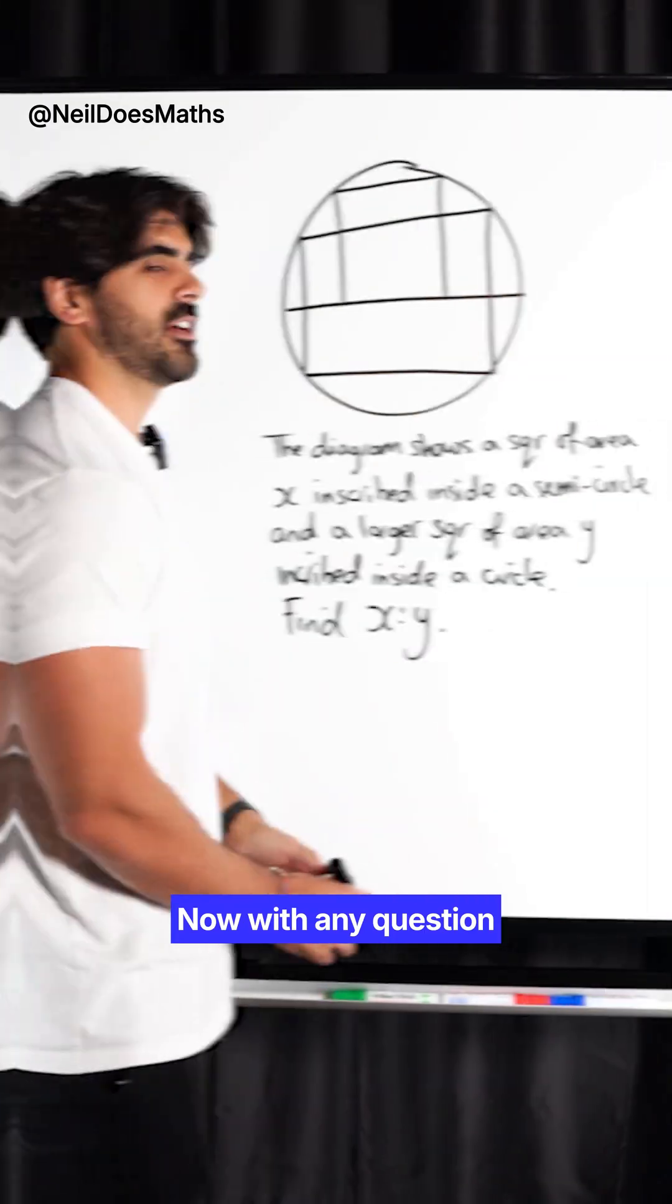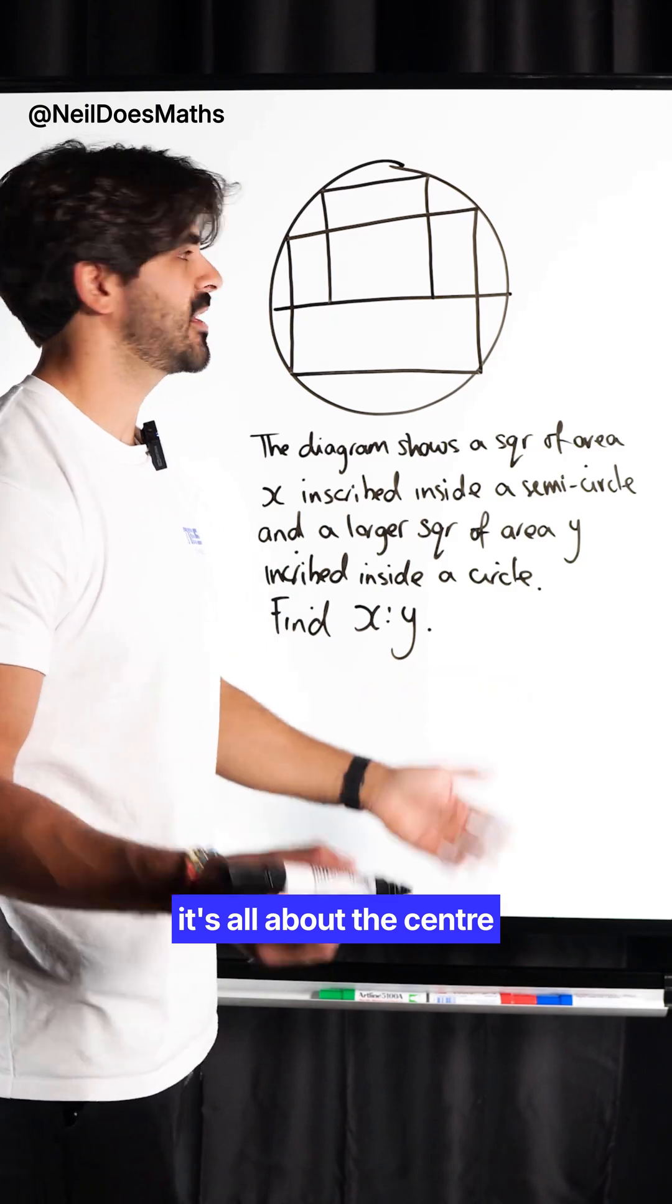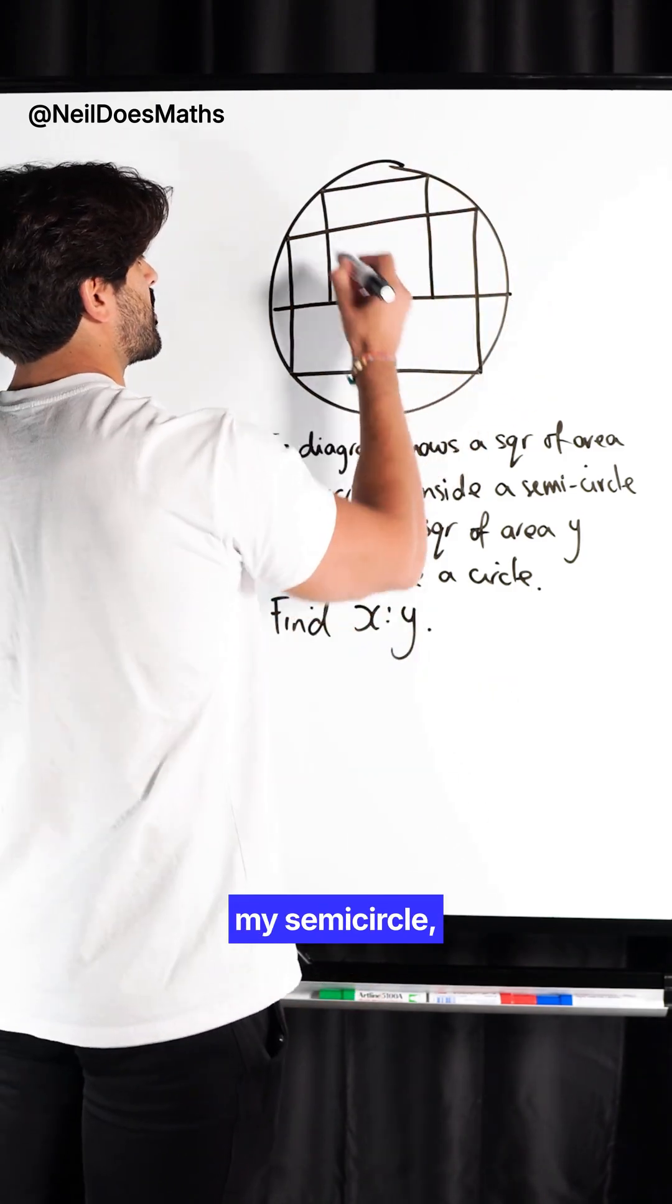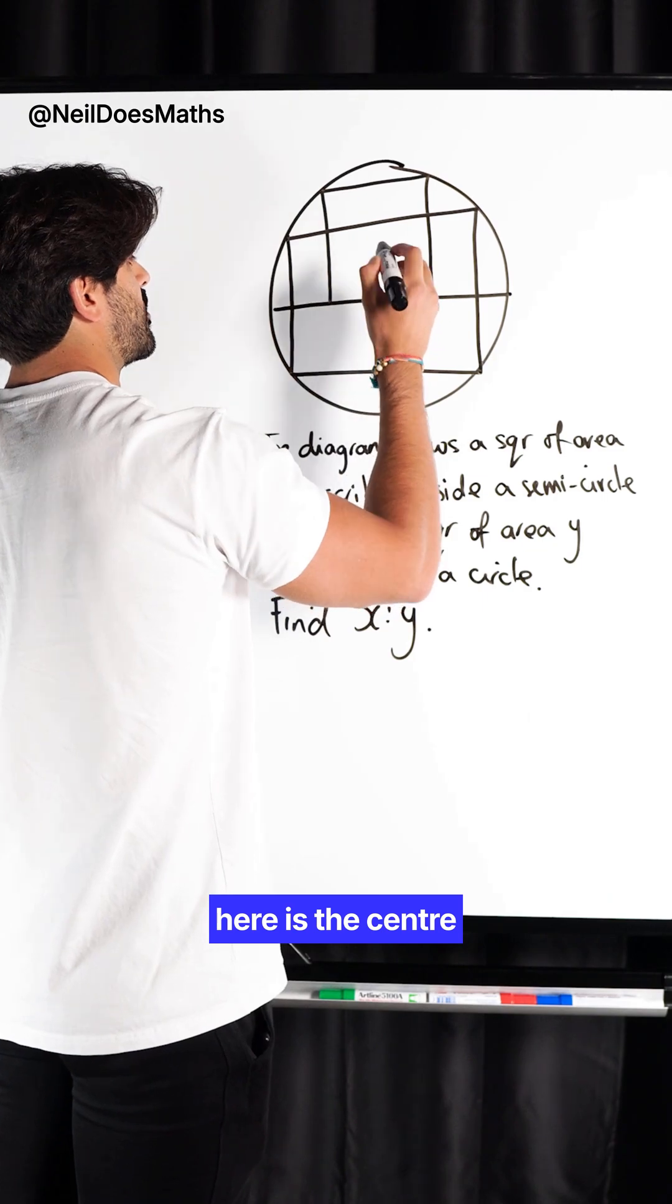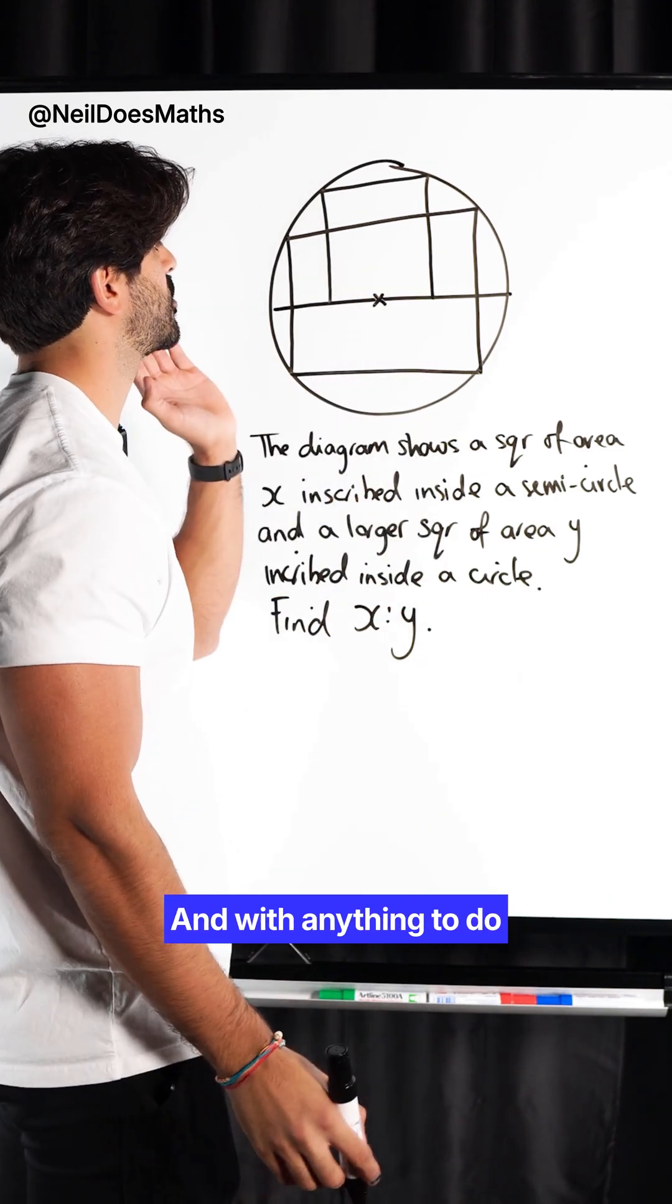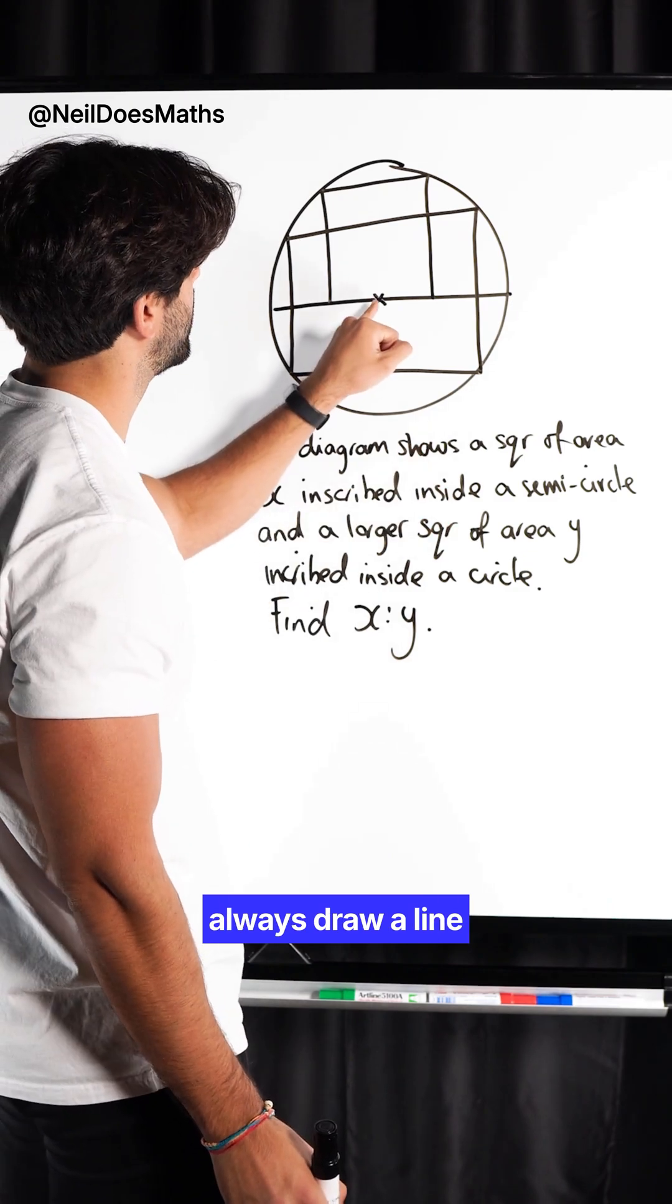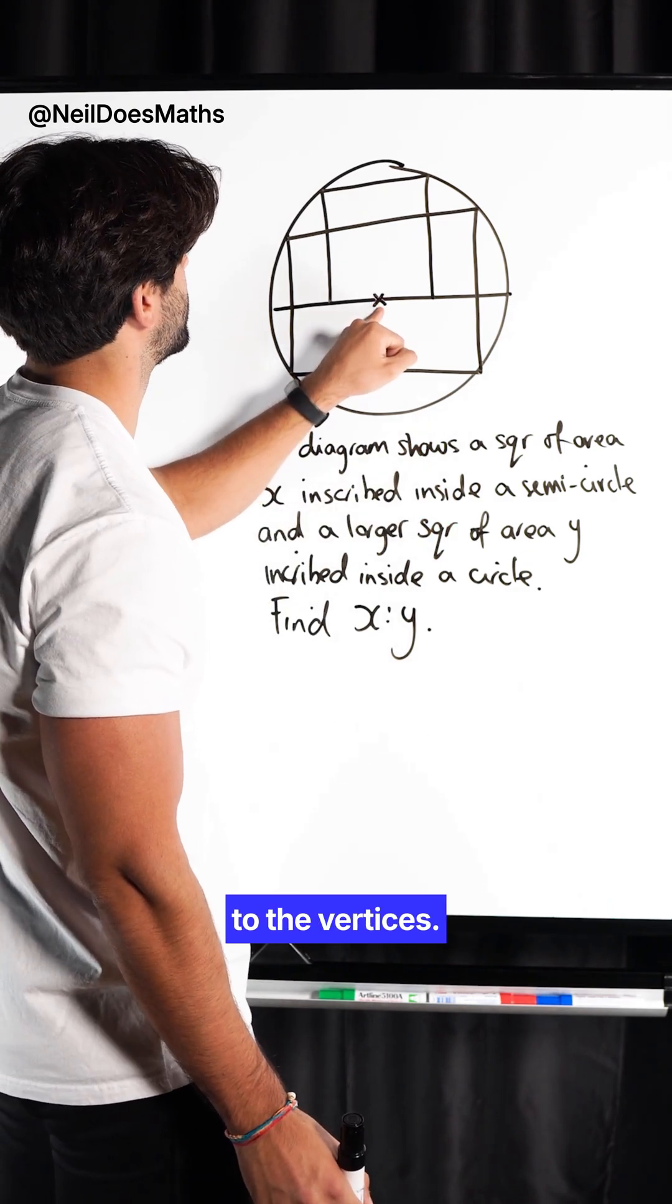Let's take a look. Now, if any question to do with circles, it's all about the center of the circle. So, here's my semicircle, here is the center of the circle. And with anything to do with circles and squares or rectangles, always draw a line from the center to the vertices.